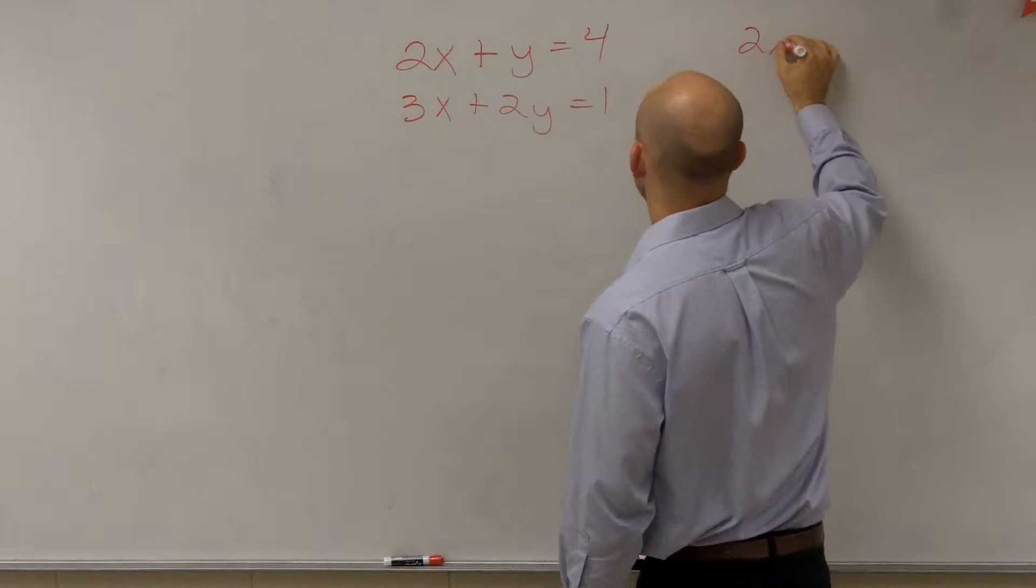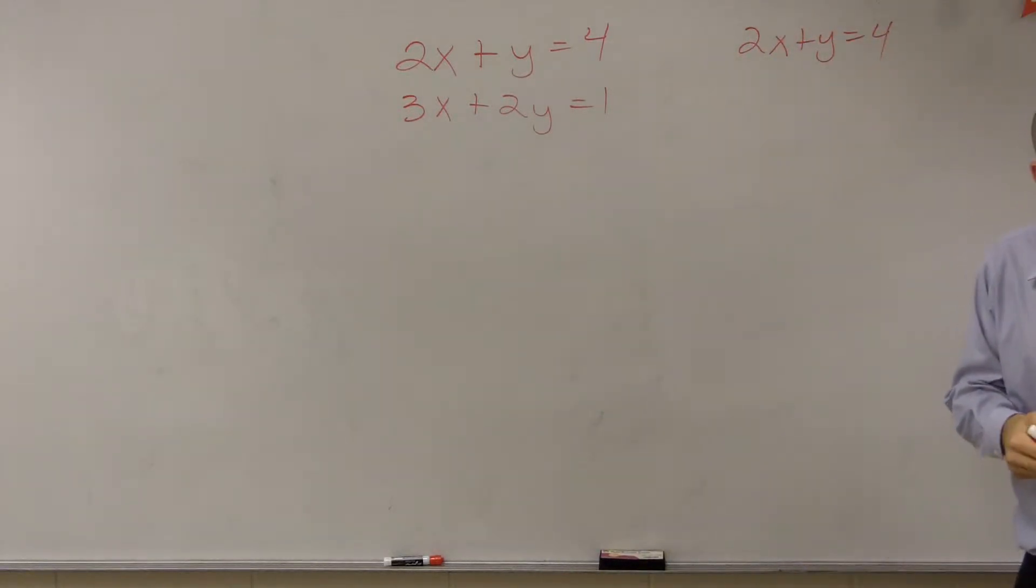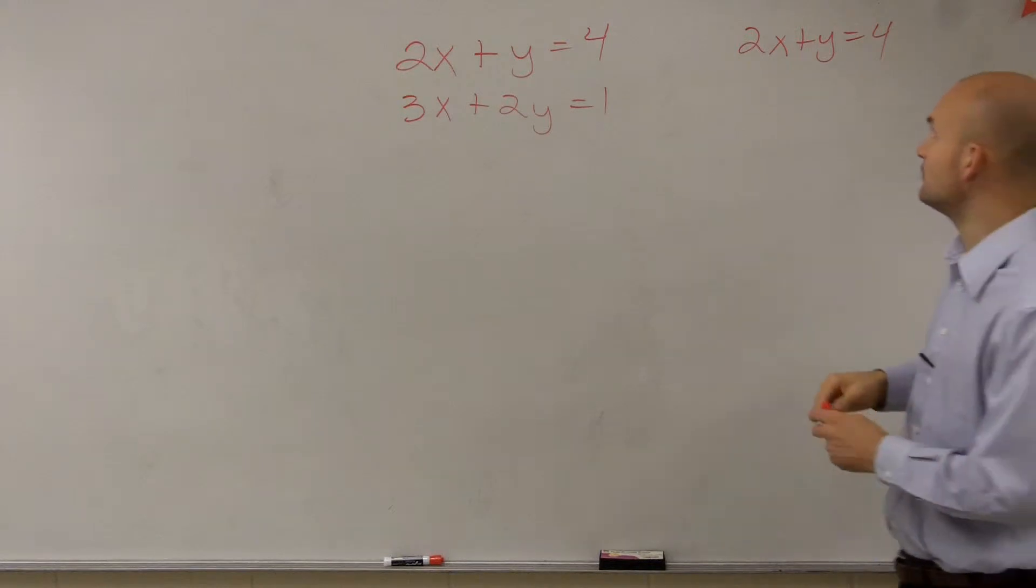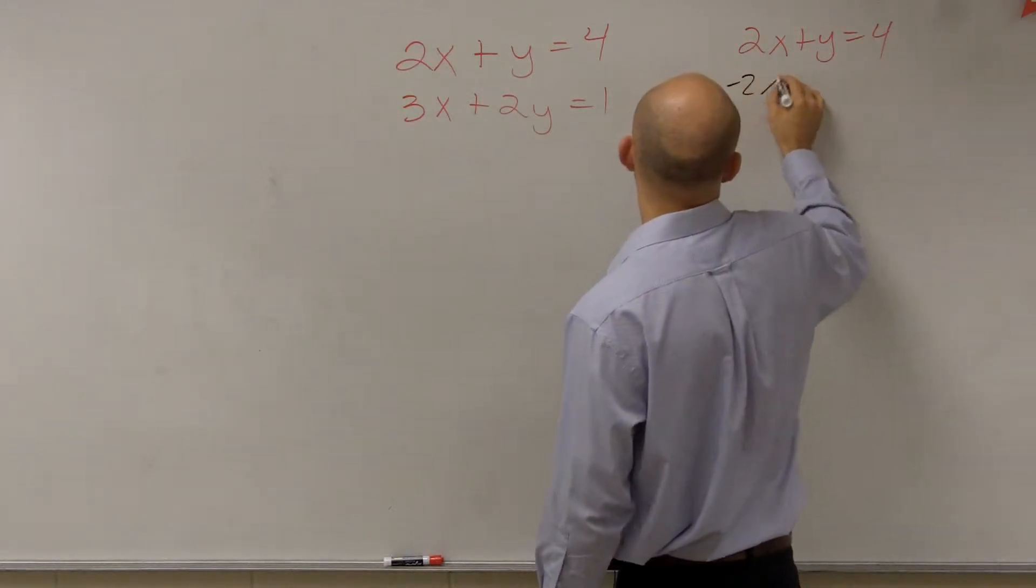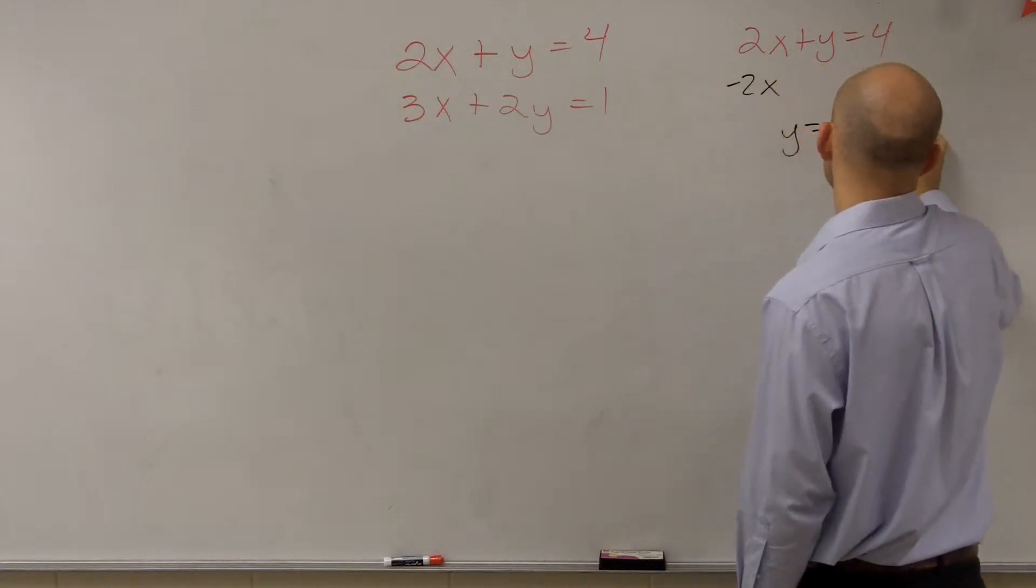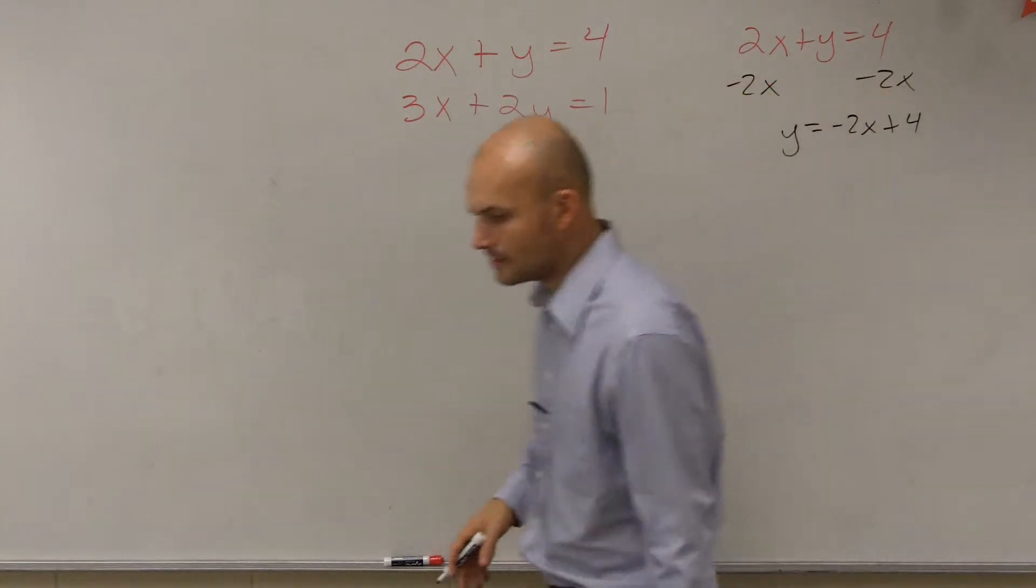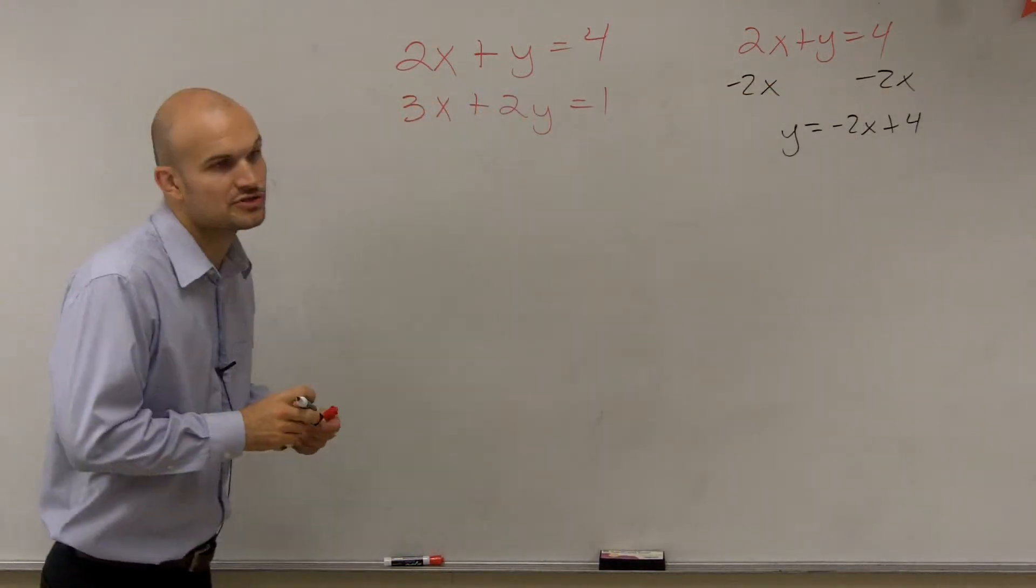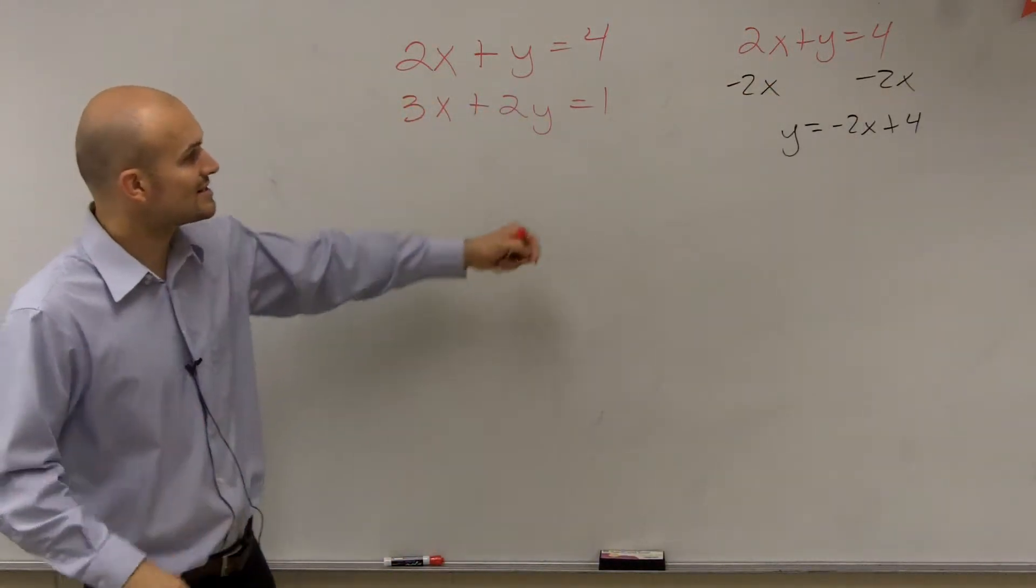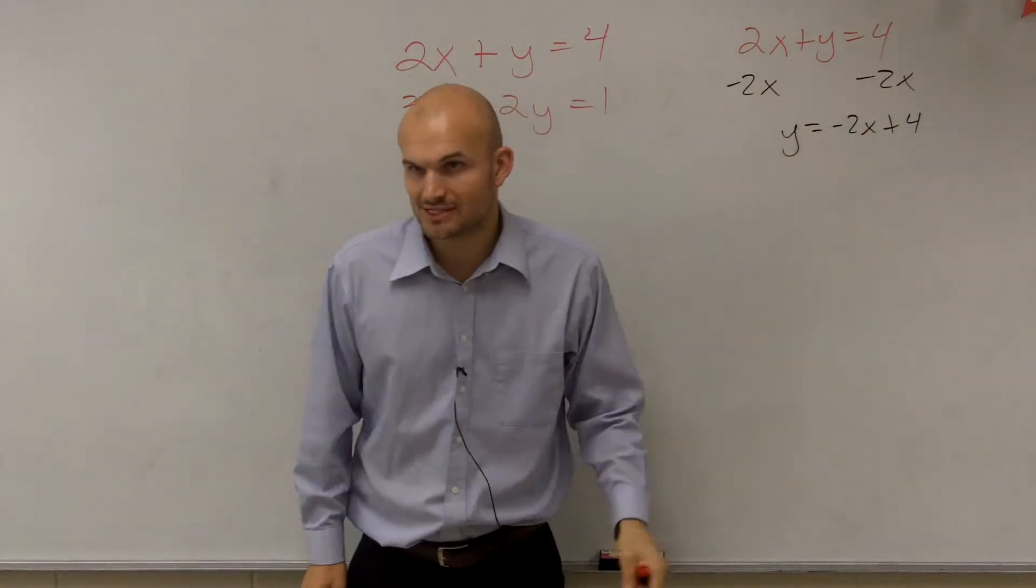So the first thing we need to do is solve for y. Well, how do you solve for y? We get it by itself by undoing. So I have y equals negative 2x plus 4. I always just like writing the variable in front of our constant, because that's what I'm used to.